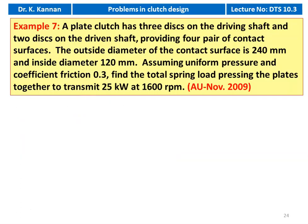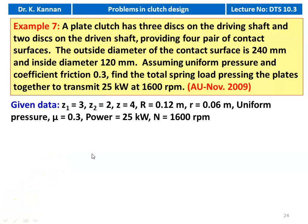Example number 7 from the November 2009 question paper. A plate clutch has 3 discs on the driving shaft and 2 discs on the driven shaft, providing 4 pairs of contact surfaces. The outside diameter of the contact surface is 240 mm and the inside diameter is 120 mm. Assuming uniform pressure and coefficient of friction 0.3, find the total spring load pressing the plates together to transmit 25 kilowatt at 1600 rpm. Given: Z1 equals 3, Z2 equals 2, so Z equals Z1 plus Z2 minus 1 equals 4. Outer radius is 0.12 meter and inner radius is 0.06 meter.